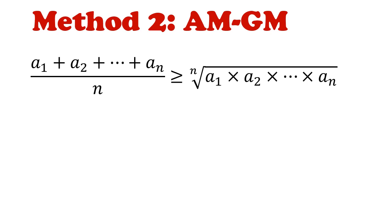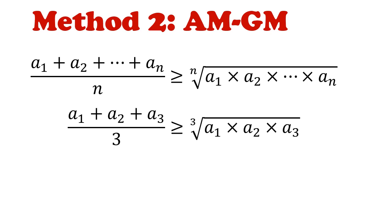The alternative method is to apply the AM-GM inequality, which states that the arithmetic mean of n numbers is always greater than or equal to its geometric mean. Let's put it in the context of the question. We're only going to be dealing with three numbers. For three numbers a1, a2, and a3, the arithmetic mean will be (a1 plus a2 plus a3) divided by 3, and the geometric mean is the cube root of the product of a1 times a2 times a3.